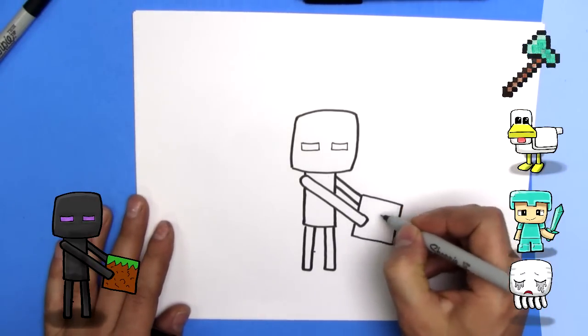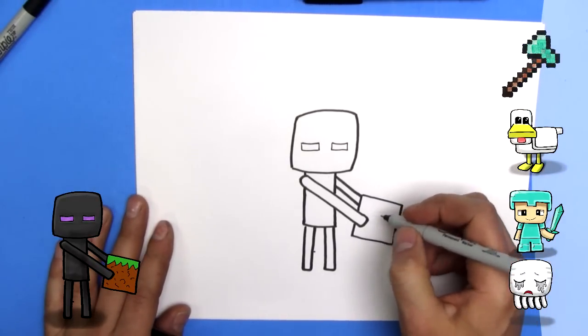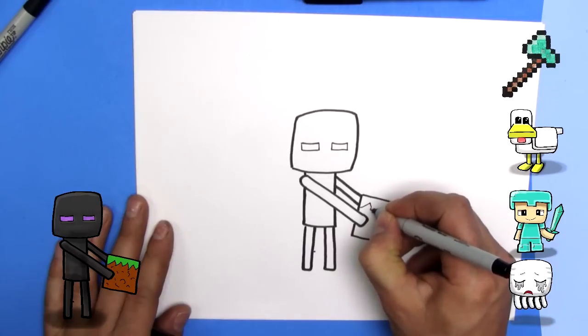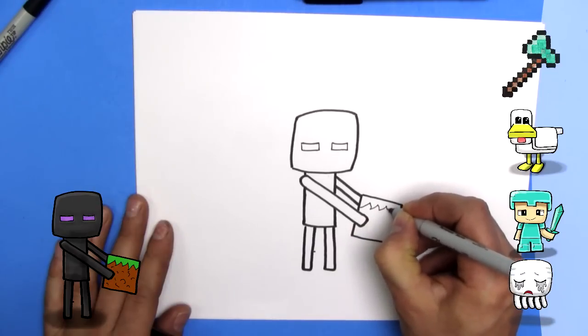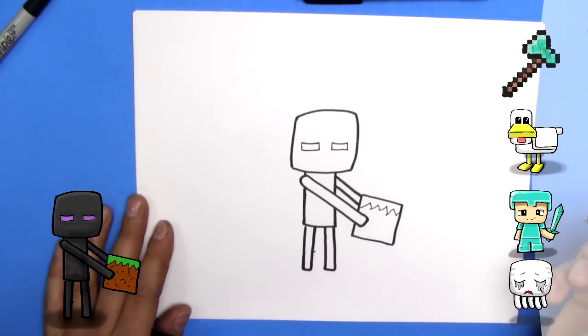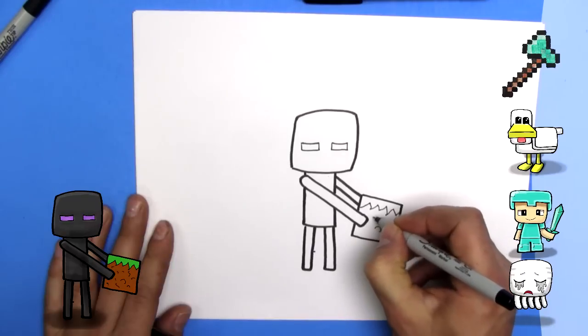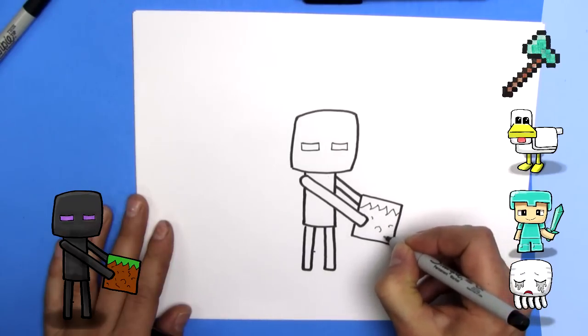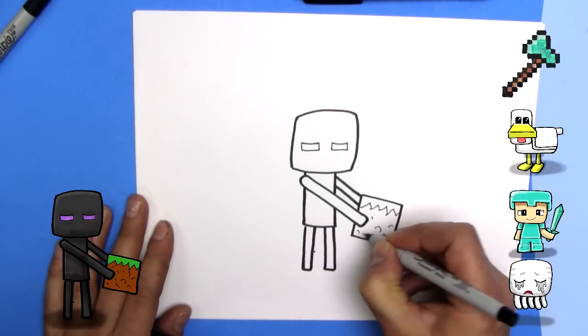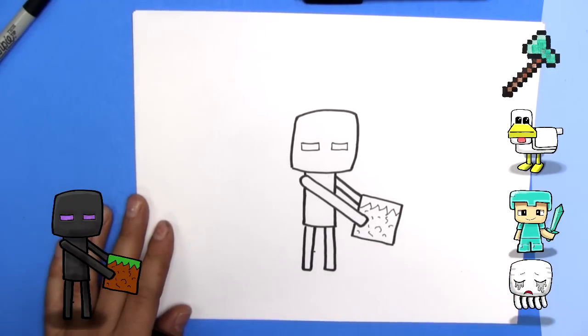So next up, we can make this block whatever we want. I'm going to make it grass, I think. So I'm just going to add some grass, like that. And put some dirt squares, little squares. For the dirt and a little couple lines. There we go.